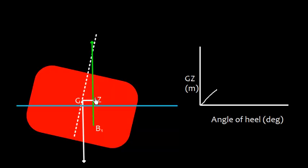From G we can make a perpendicular here which is called GZ. This is a horizontal line and this is called the righting lever. If we make the graph like this, this is angle of heel in degrees and the GZ in meters. So at this position we have this GZ.